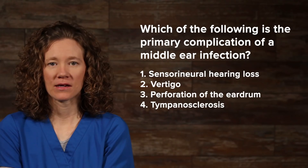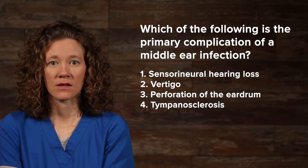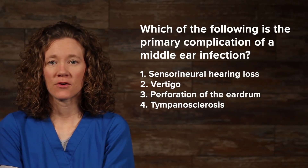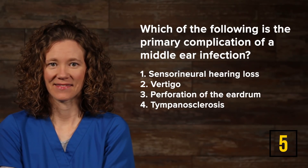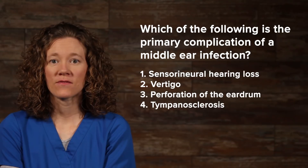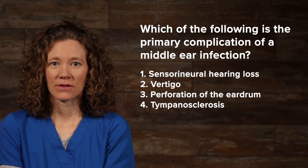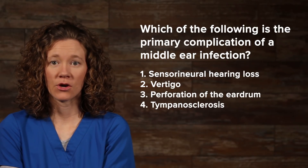Study question: Which of the following is the primary complication of a middle ear infection? 1. Sensorineural hearing loss. 2. Vertigo. 3. Perforation of the eardrum. 4. Tympanosclerosis. The correct answer is 3, perforation of the eardrum. Sensorineural hearing loss results from interference with conduction in the inner ear. Vertigo results from an infection that has spread to the inner ear. Tympanosclerosis is caused by repeated ear infections. Thus, perforation of the eardrum and conductive hearing loss are the primary complication of a middle ear infection.